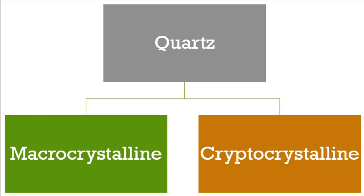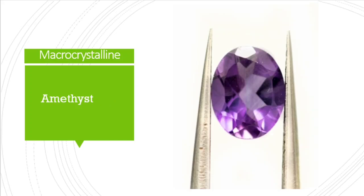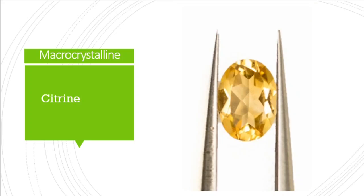We will now discuss the types of quartz that come under macrocrystalline. The first one is rock crystal, which is a colorless quartz variety that you can easily observe in day-to-day life. The second one is amethyst, the purple color quartz variety. Then citrine, a yellowish-brown color quartz variety.